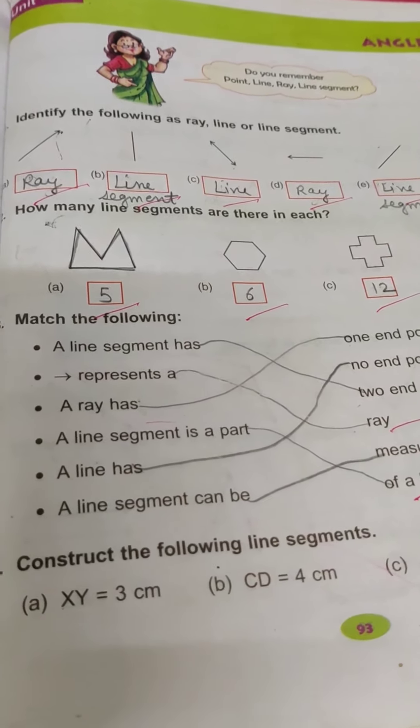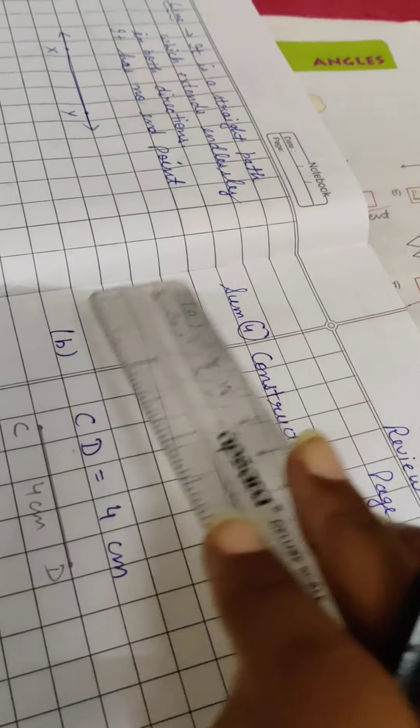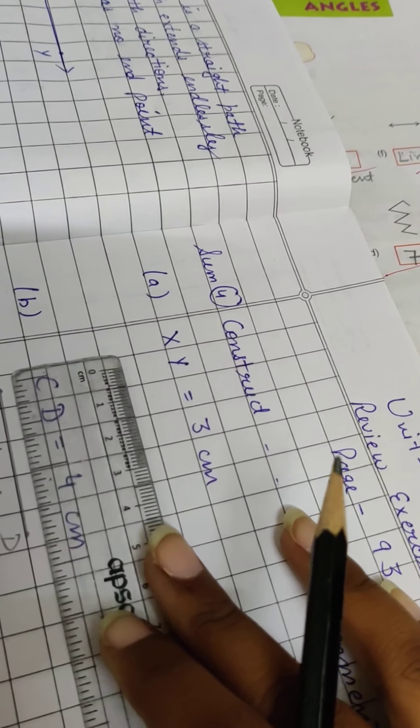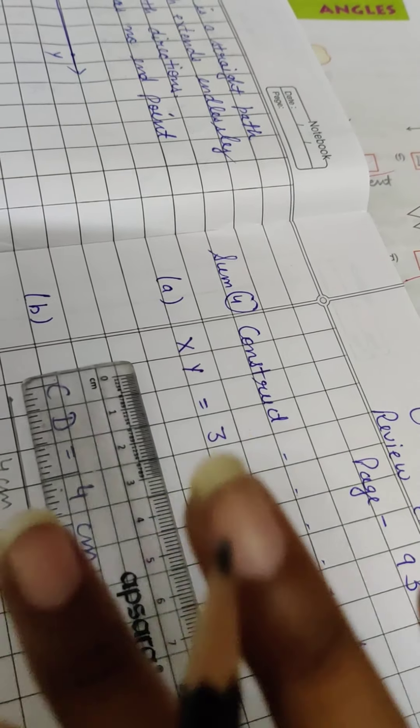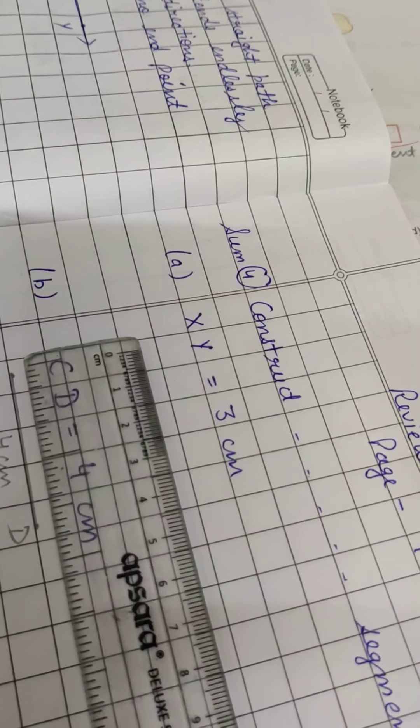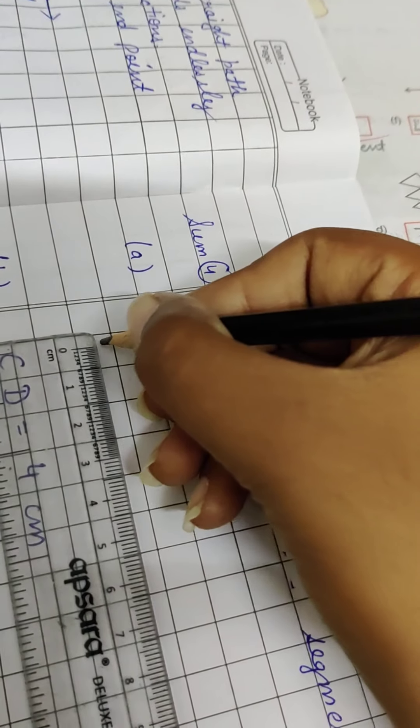Construction. You have to draw your line segment. Here we will draw 3 cm. How do we draw any line segment? Firstly, you put your scale in a fixed place. You will have one hand on the scale. Now you know how to make 3 cm line segment means end point and starting point, so starting point is fixed.